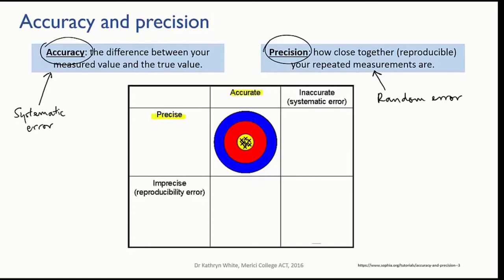In other words, low systematic error and low random error. The shots are clustered together. This is like measurements that are very close to one another, and they cluster right on the bullseye, which you could think of as the true value of the measurement.